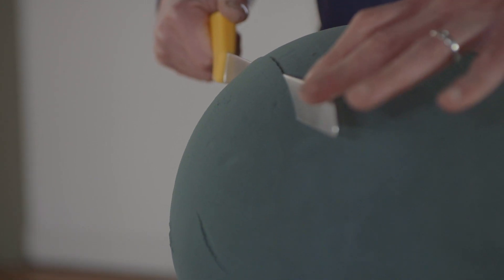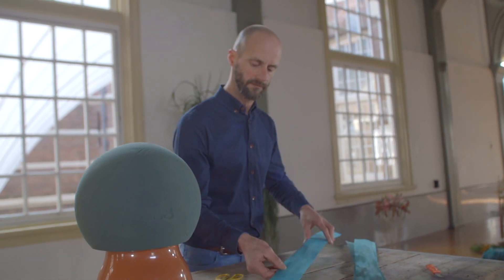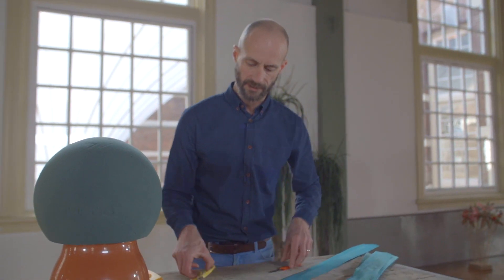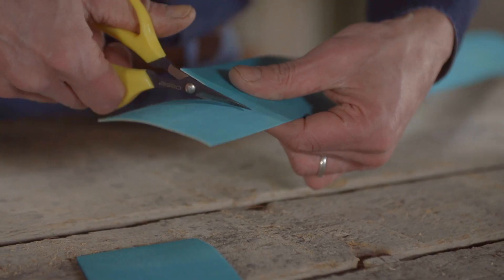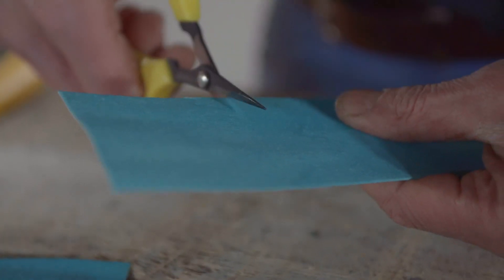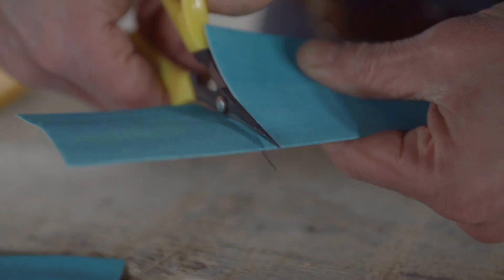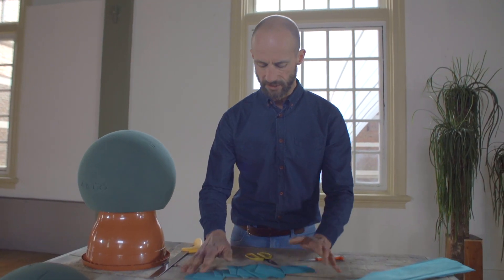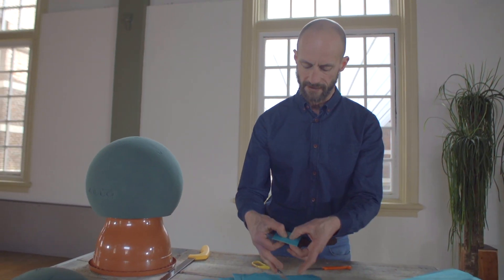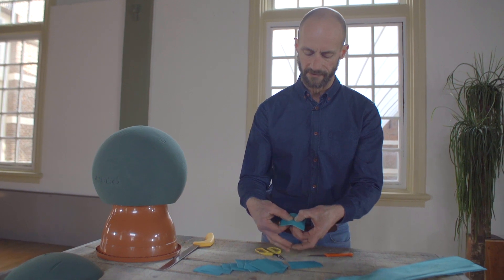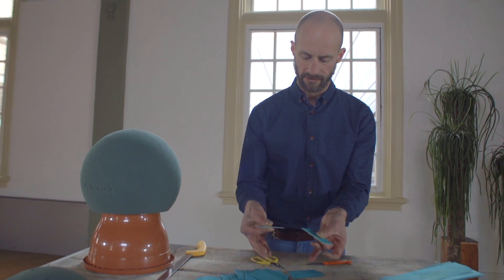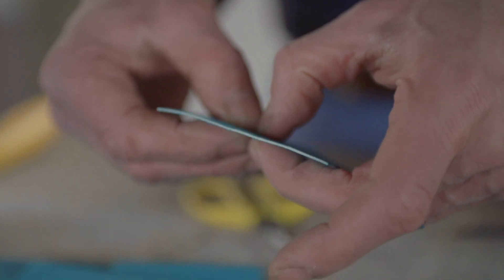Set that aside. With the veneer, we're going to cut it into pieces like this. Once you've cut some of these squares, split them in half. These will literally just split and you can break them like this.